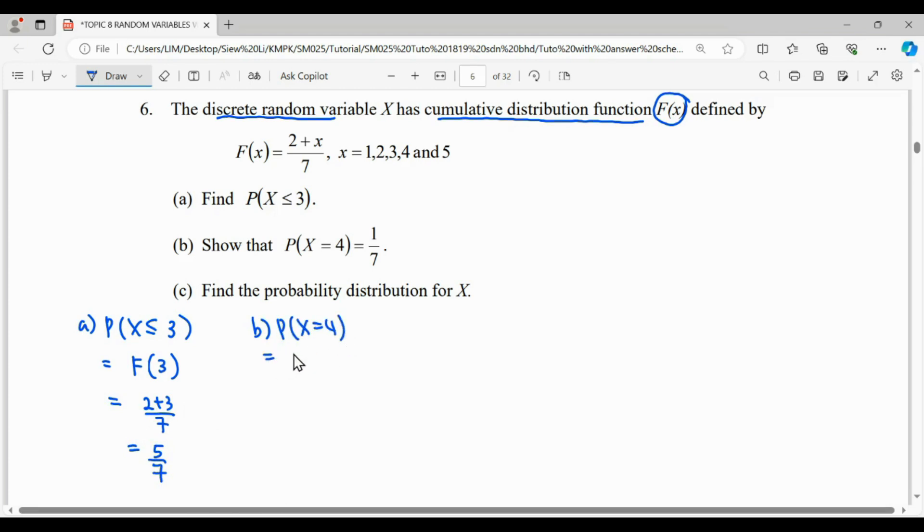For question B, if we want to prove X equals 4, we can accumulate up to 4 and then minus the accumulate for the random variable up to 3. When you accumulate your probability up to 4, it involves 1, 2, 3, 4.